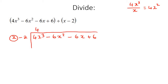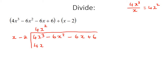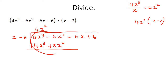We write 4x to the power of 2 at the top. Then we take that 4x squared and multiply it with x minus 2, giving us 4x to the power of 3 take away 8x squared. Then we do a sign change — this becomes negative and this becomes positive — and we add them together. 4 take away 4 gives 0, and negative 6 plus 8 gives us 2x squared. Then we bring the rest down: negative 6x plus 6.